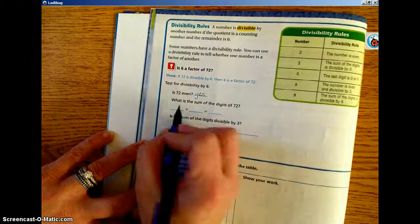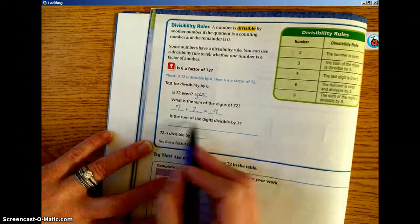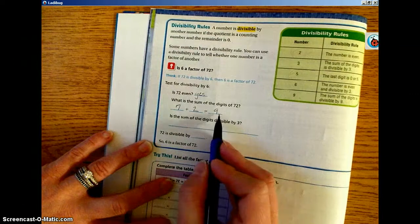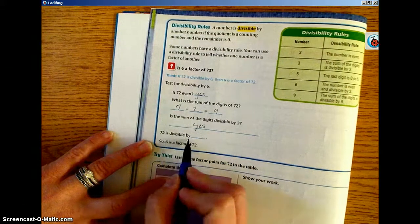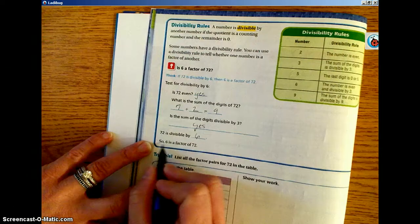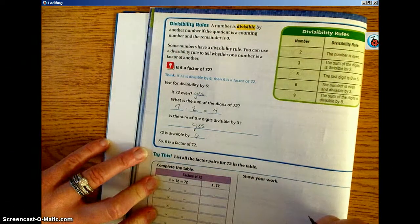What is the sum of the digits of 72? 7 plus 2 is 9. Is the sum of the digits divisible by 3? Is 9 divisible by 3? Yes. 72 is divisible by 6. So 6 is a factor of 72. It does work.